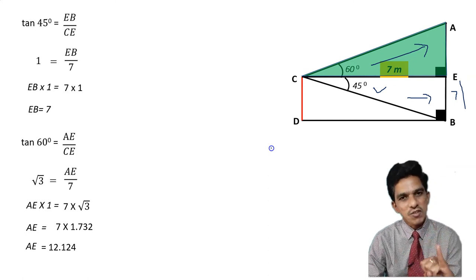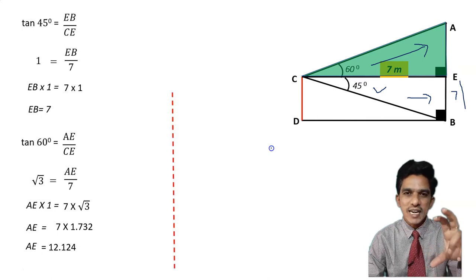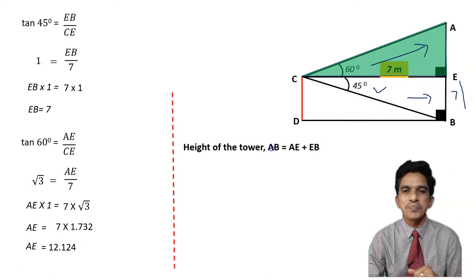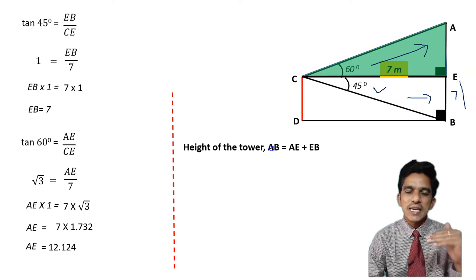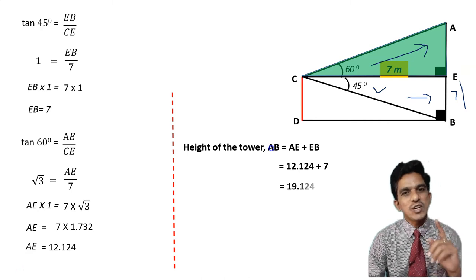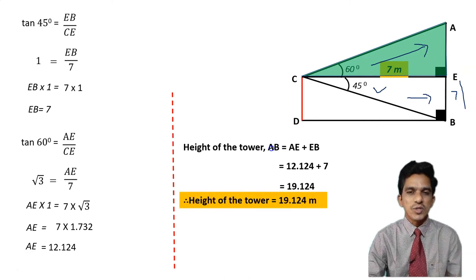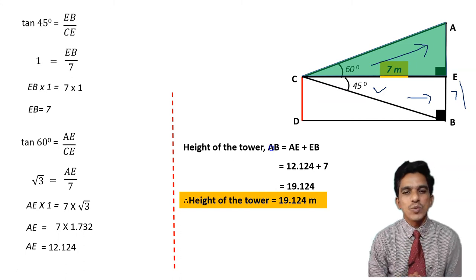We have both values: AE = 12.124 and EB = 7. Adding them: AB = AE + EB = 12.124 + 7 = 19.124 meters. Therefore, the height of the tower is equal to 19.124 meters.